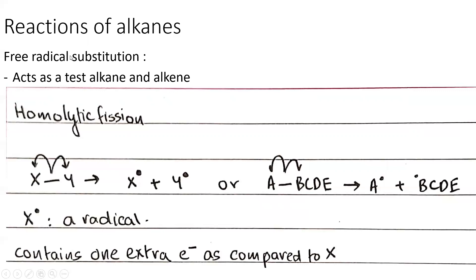Next up we have free radical substitution. Alkanes only undergo two reactions: combustion and free radical substitution. A radical is an atom with one extra electron compared to its neutral state — it can be carbon or hydrogen. They act as a test to distinguish between alkanes and alkenes. Before we move on, you need to know what homolytic fission is.